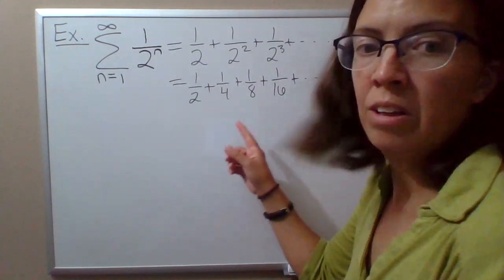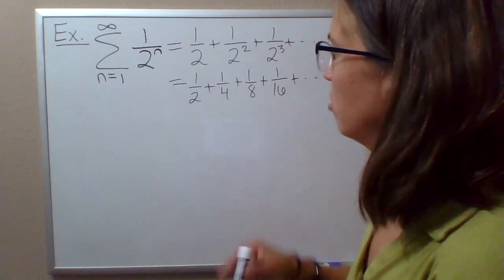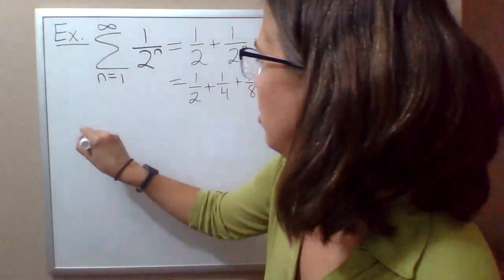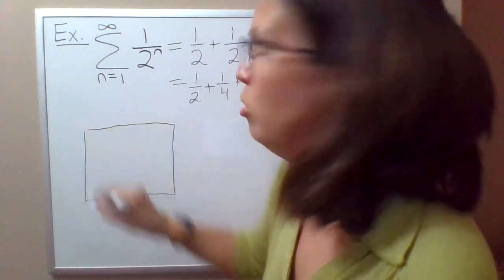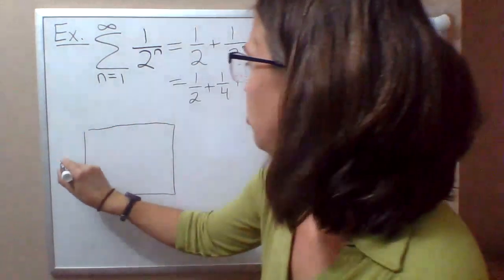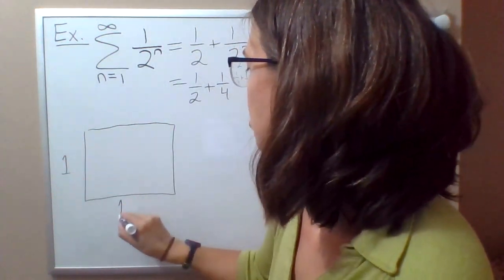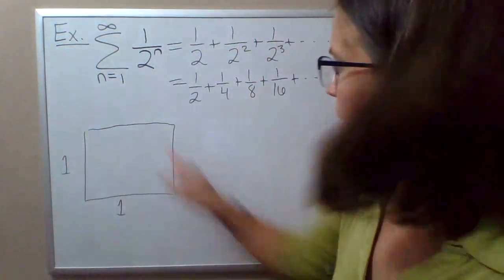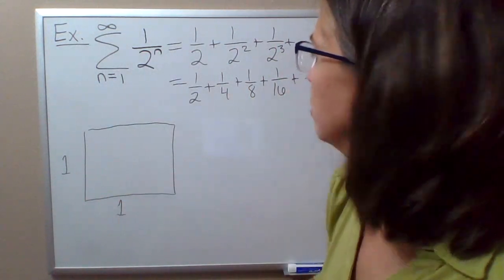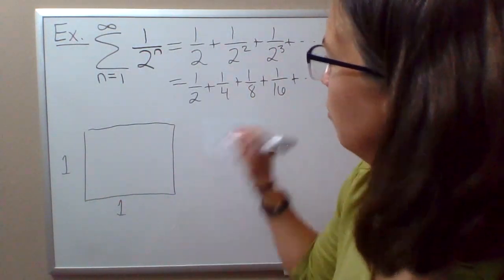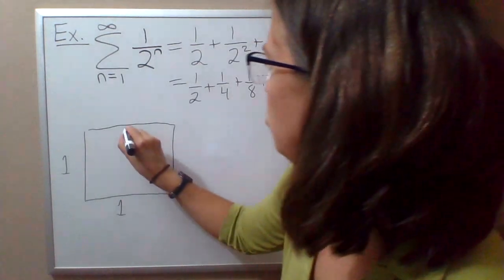One way to visualize the sum of this series is to say suppose we have a box, a unit square, so the length of each side of the square is 1, and so the area of the square would be 1 times 1, so it's 1 square unit.